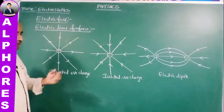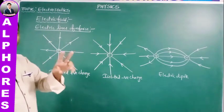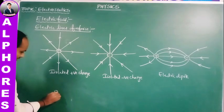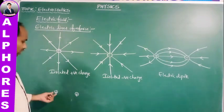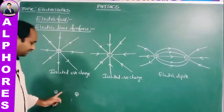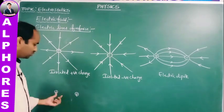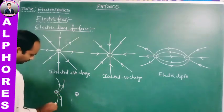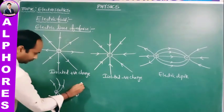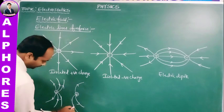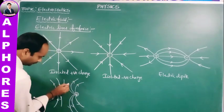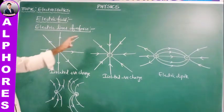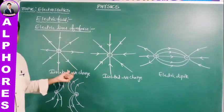You may also consider the electric lines of force between two positive charges or two negative charges. For example, between two positive charges: if a unit positive charge is placed between them, it is repelled by both. The lines of force follow directions accordingly. These are the electric lines of force between two positive charges.